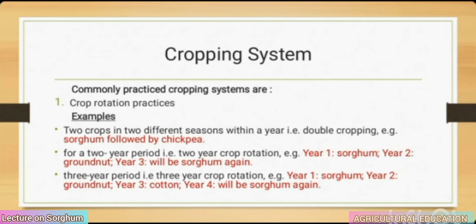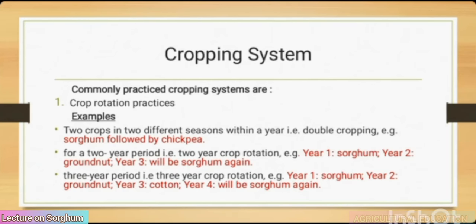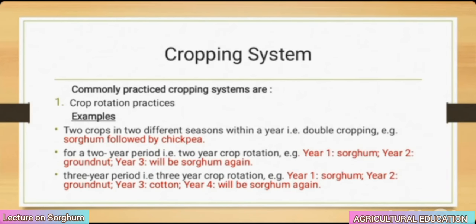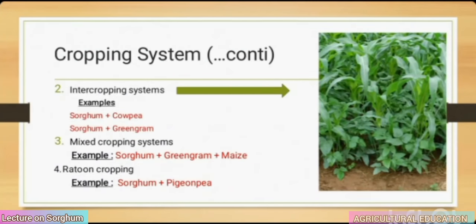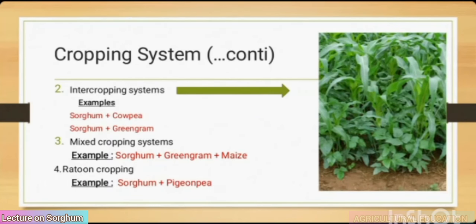Cropping systems commonly practiced: crop rotation — double cropping (2 crops in 2 different seasons within a year), e.g., sorghum followed by chickpea. Two-year crop rotation: year 1 sorghum, year 2 groundnut, year 3 sorghum again. Three-year crop rotation: year 1 sorghum, year 2 groundnut, year 3 cotton, year 4 sorghum again. Intercropping systems: sorghum + cowpea; sorghum + greengram. Mixed cropping: sorghum + greengram + bean. Diatone cropping: sorghum + pigeonpea.